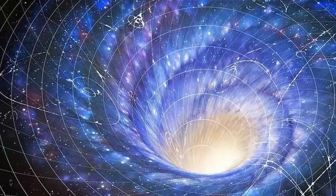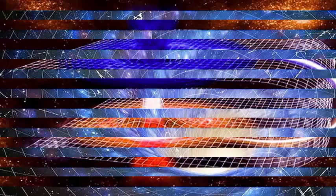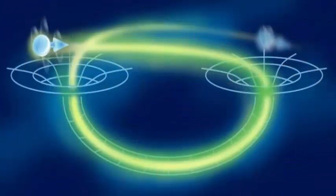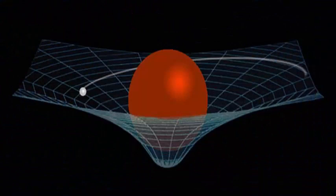The recent detection of gravitational waves created by distant black holes in collision confirmed Einstein's theory. Large stars can actually make the fabric of the space-time continuum curve, which contributes to the orbits of curved planets as they move through space.